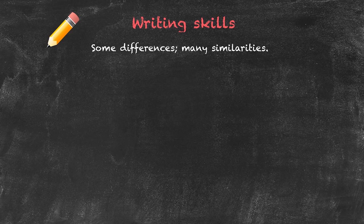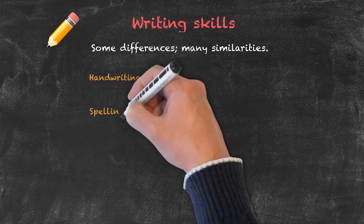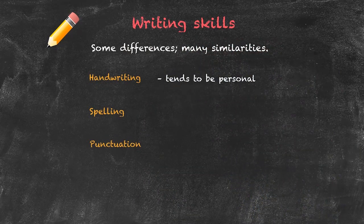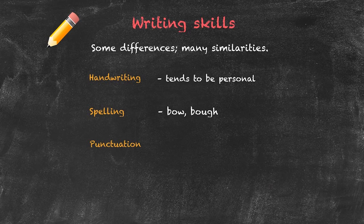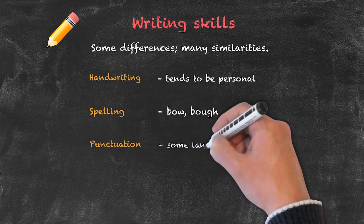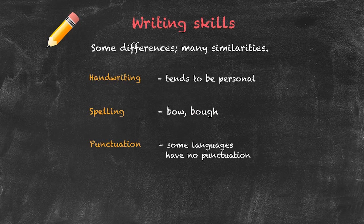Within writing skills itself, there are some sub-skills we may want to teach, including but not limited to handwriting, spelling, and punctuation. Handwriting is a personal thing, but it's very important for students to get handwriting practice to ensure they are forming letters correctly. Spelling can often be a problem for all levels of student given that English is not phonetic — for example, 'bow' and 'bow' sound the same but are spelled completely differently. Finally, regarding punctuation, many languages have a very different punctuation system to English, and some languages have no punctuation whatsoever, which can make the English punctuation system quite difficult for those students.